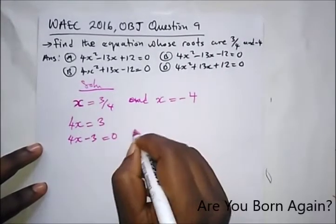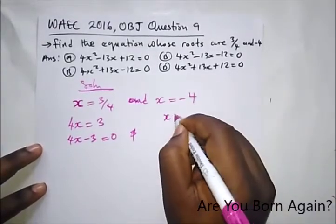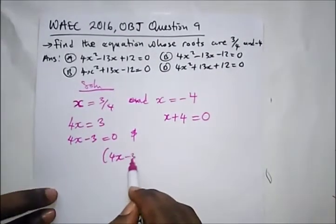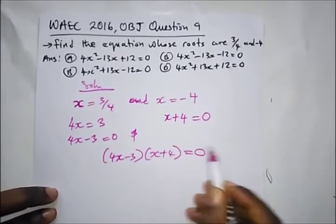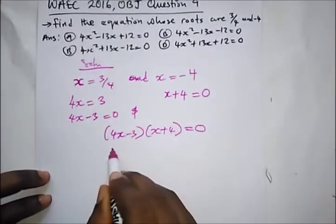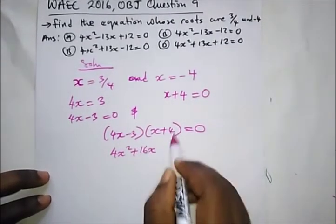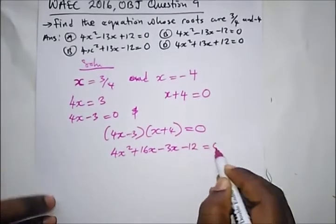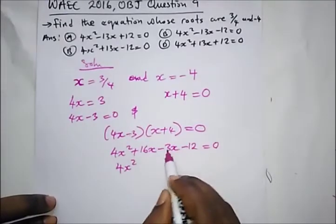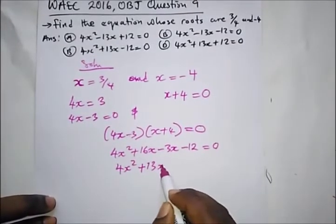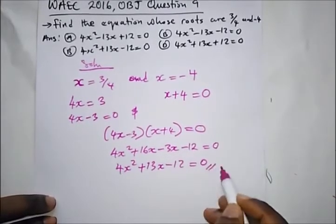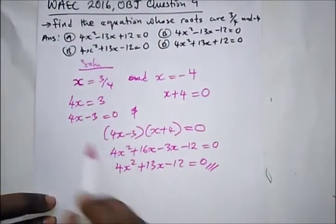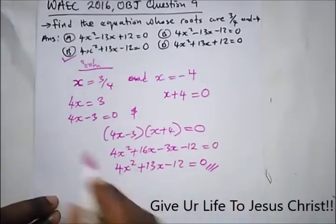And simply bringing minus 4 to this side gives us X plus 4 equals 0. So we have (4X minus 3)(X plus 4) equals 0. Opening the bracket we get 4X² plus 16X minus 3X minus 12, which gives us 4X² plus 13X minus 12 equals 0. The correct option is option C.